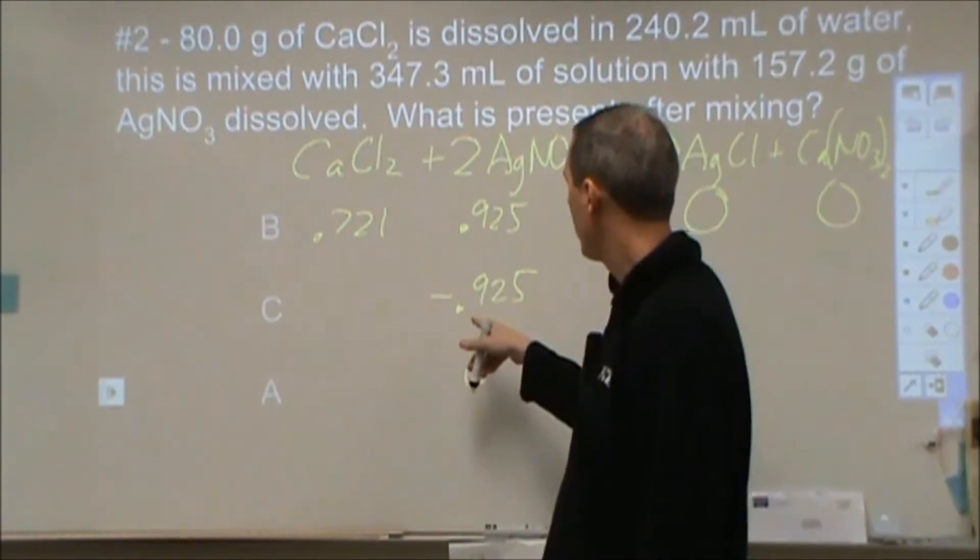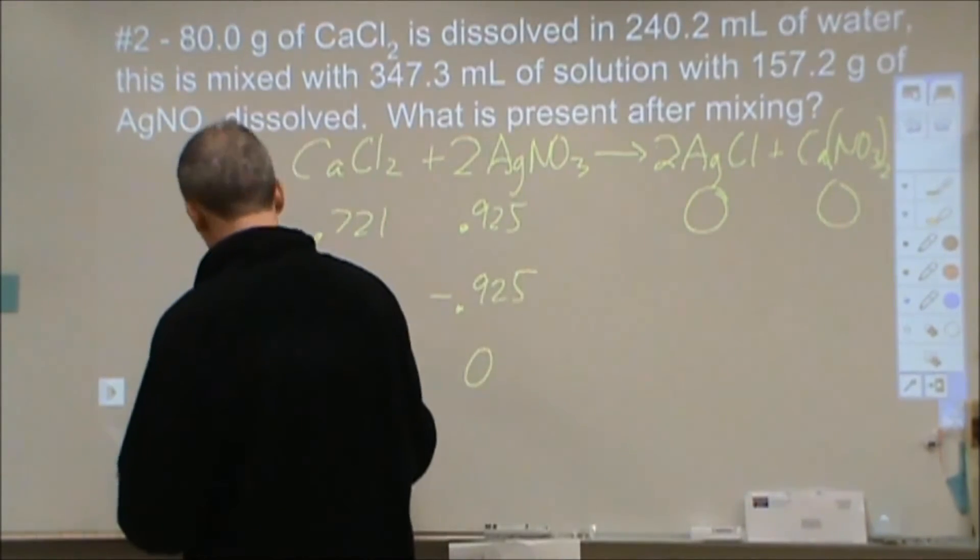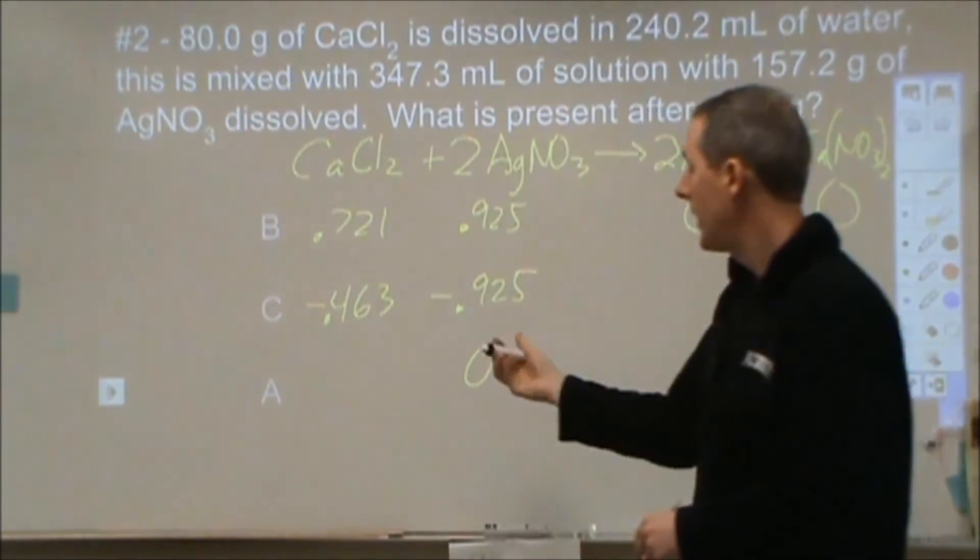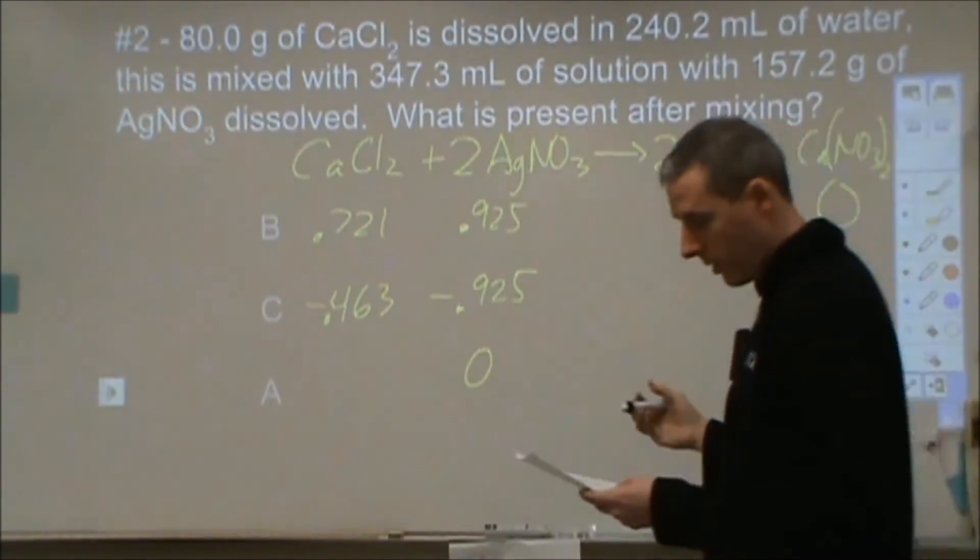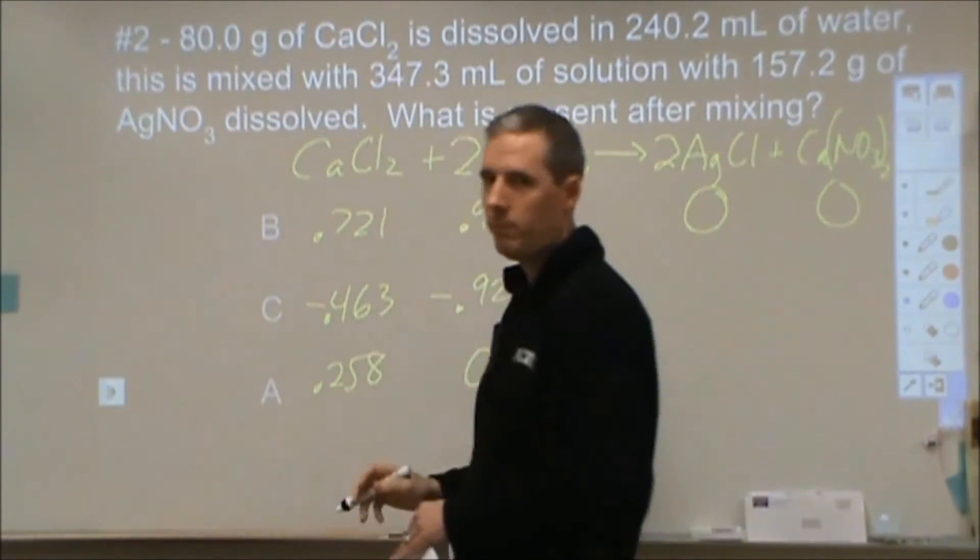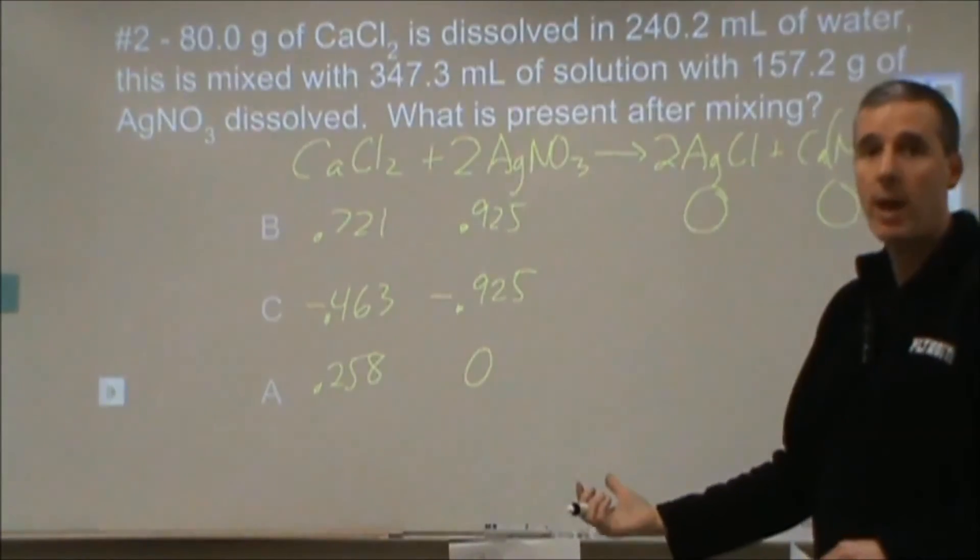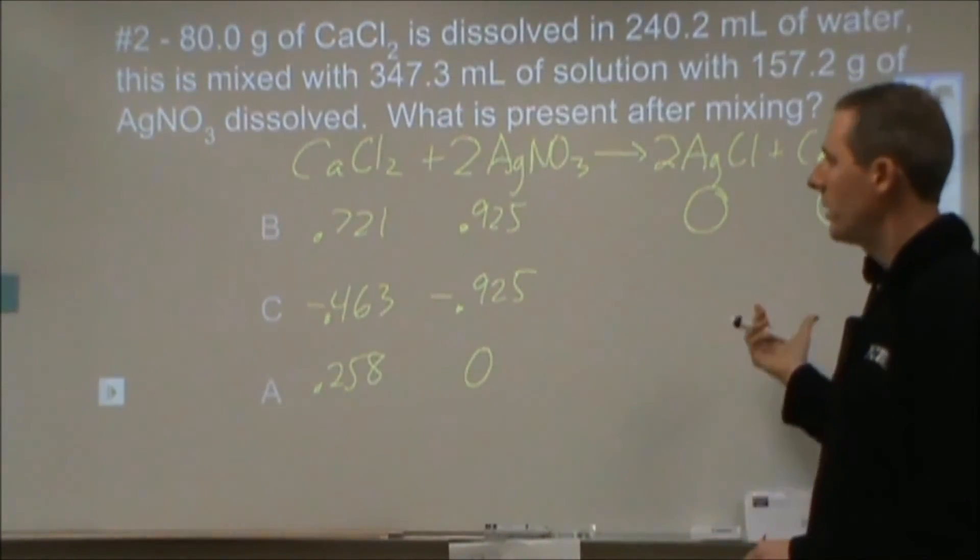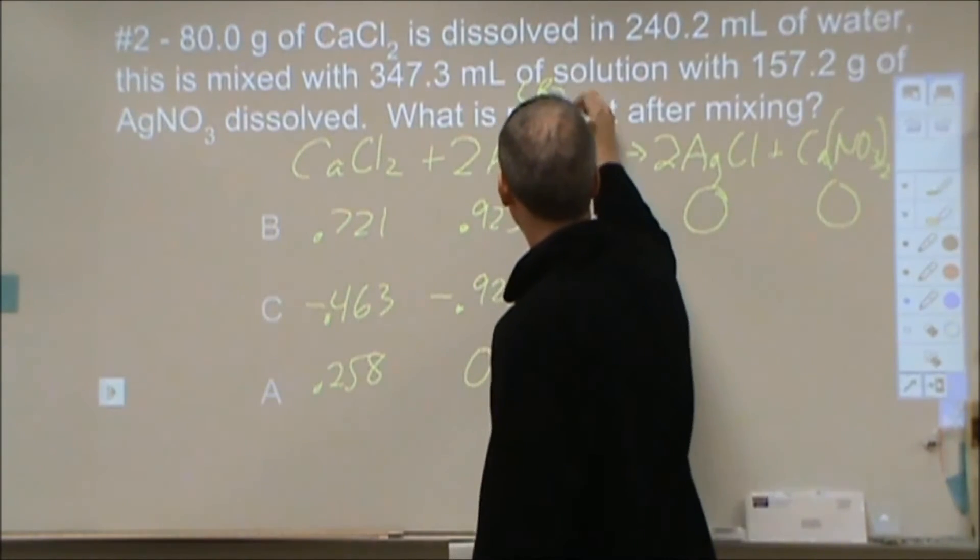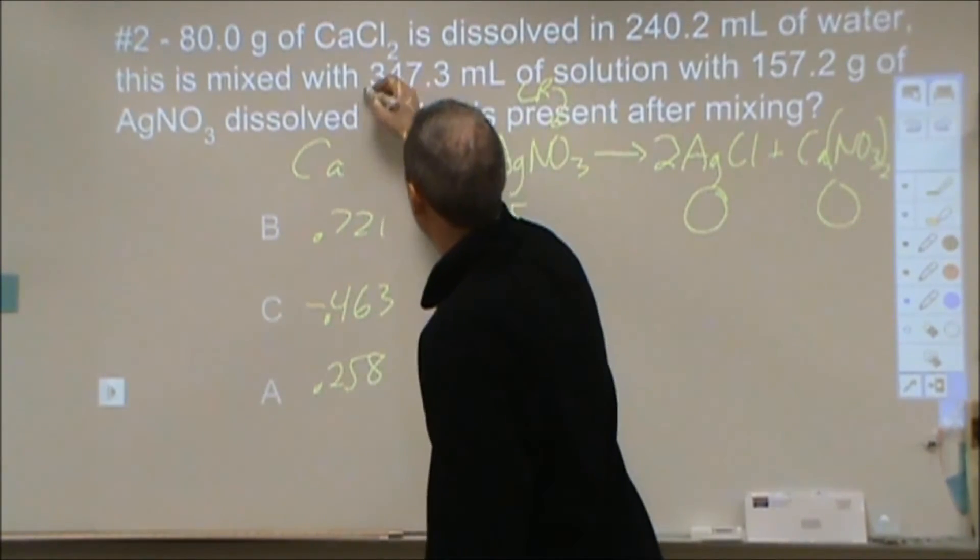So I'm going to take this 0.925. 0.463 is half that amount. And that's going to leave me with an excess of calcium chloride. I'm going to have 0.258 moles. So that's what's going to happen with our reactants. Now we can pay attention to the products. Now that we've assigned that this is our limiting reagent and this is our excess reagent.